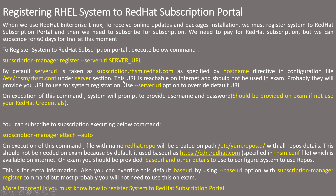This URL is reachable on the internet and should not be used in the exam. Probably they will provide you some hostname of the server you need to register with. If you execute the command without the --server-url option, by default it will take the hostname as specified in the rhsm.conf file. To override this, you must use --server-url and then provide the URL you are given on the exam.